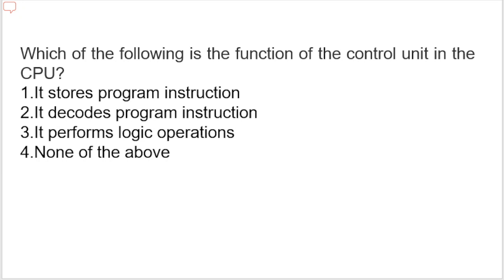Which of the following is a function of the control unit in the CPU? Options are: it stores program instructions, it decodes program instructions, it performs logical operations, or none of the above. The correct option is it decodes program instructions. The control unit takes instructions from memory, then decodes and executes them. It controls and coordinates the function of all parts of the computer, and its main task is to maintain and regulate the flow of information across the processor.